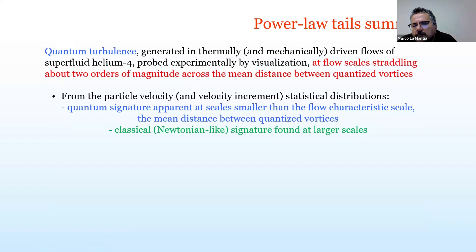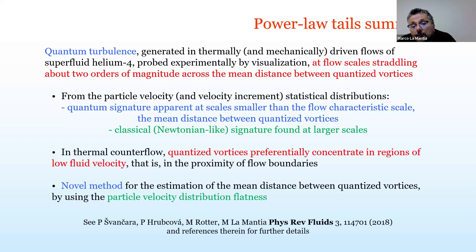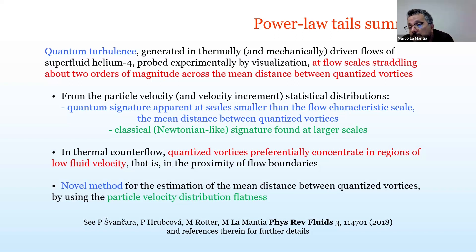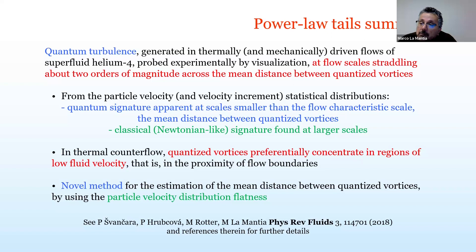To summarize the power-law tail findings: if you probe scales smaller than the inter-vortex distance, you get behavior not usually seen in Newtonian fluids. It has also been experimentally demonstrated that quantized vortices concentrate in regions of low fluid velocity, that is, near boundaries. The shape of the particle velocity distribution as a function of scale can be used to estimate the mean inter-vortex distance in conditions where the gamma parameter is not already known.